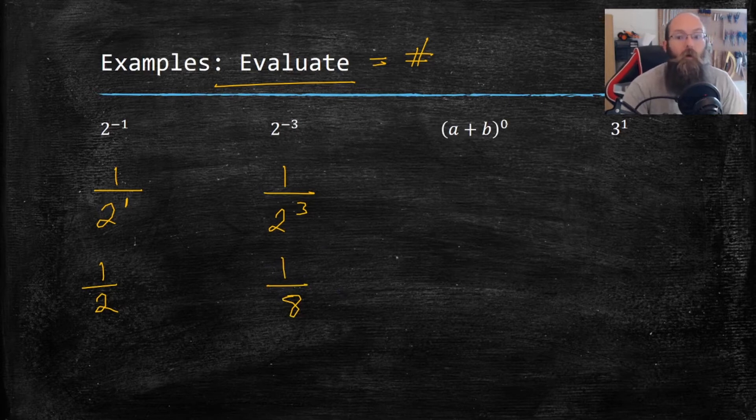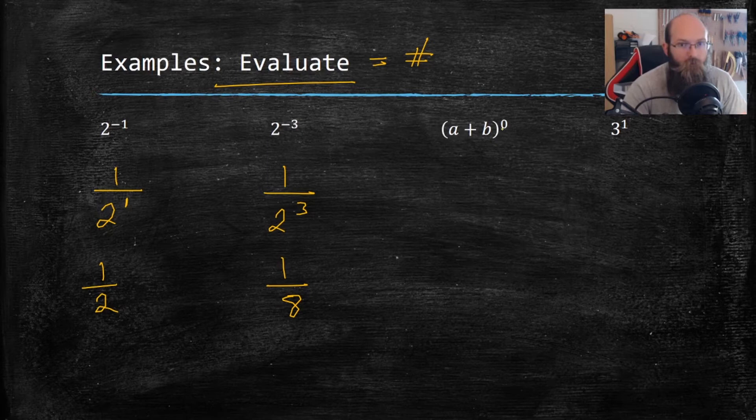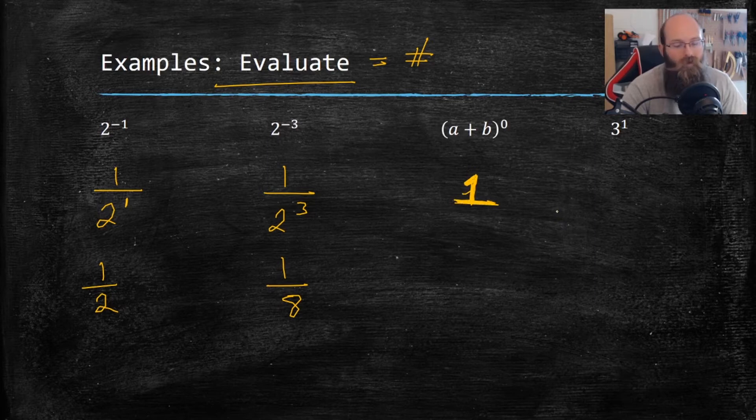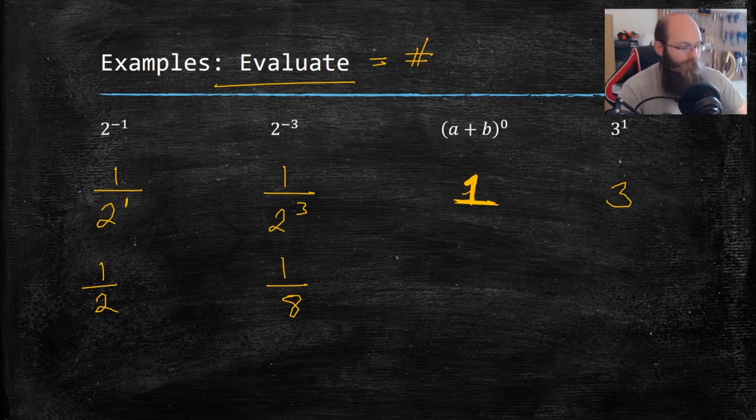This next one, a plus b all raised to the zero. Remember, anything raised to the zero power is going to be one. Yep, that is right. One, just a one. No need to write anything else. That is a one, that is it. And then 3 to the first power, that's just 3 times itself one time. So that's just three.